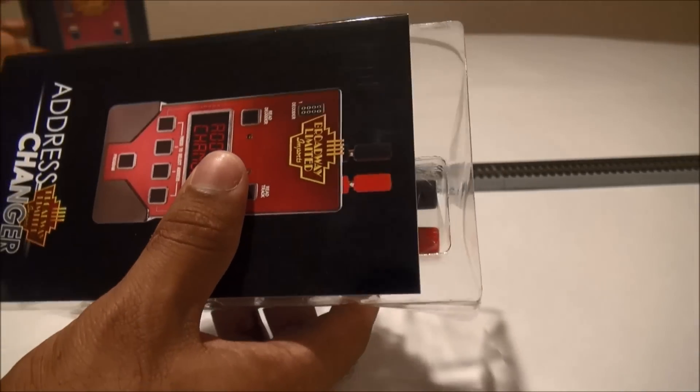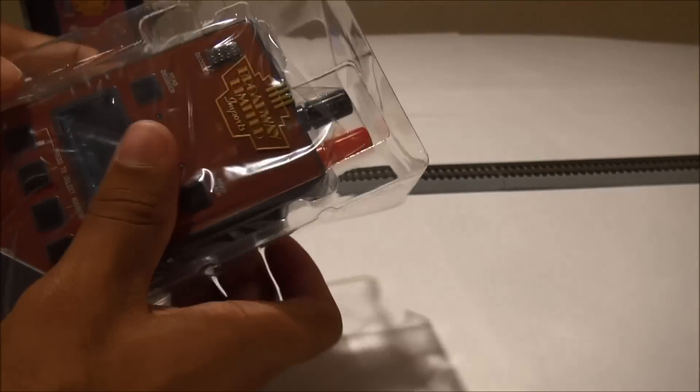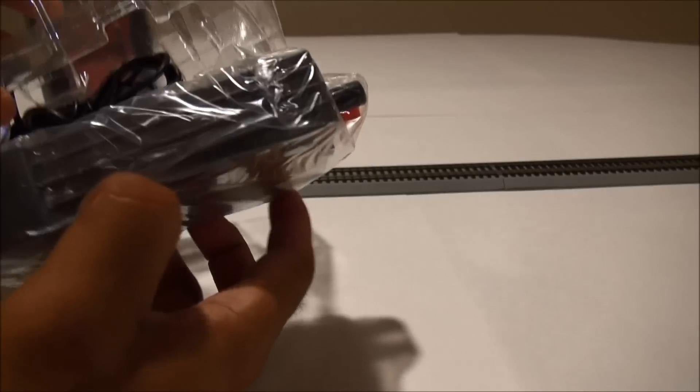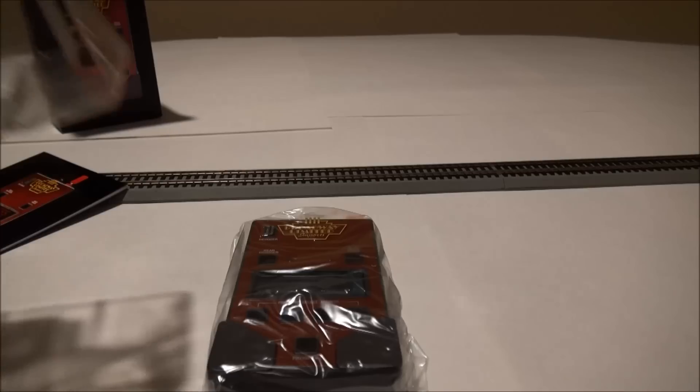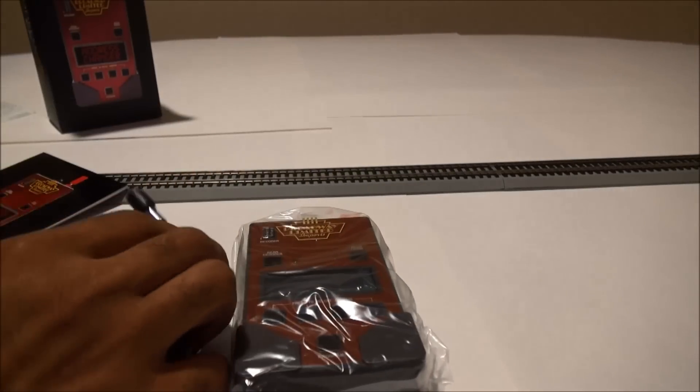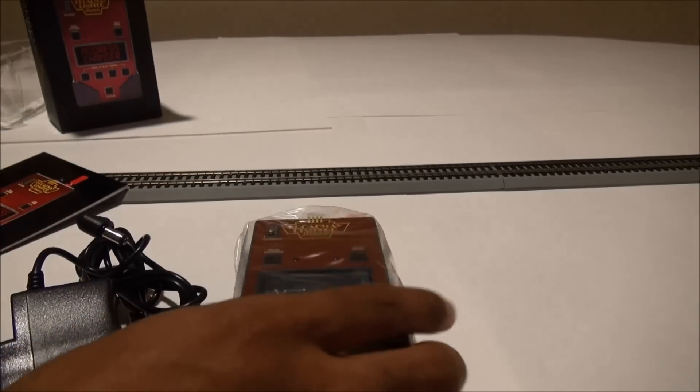Let's take a look. It looks like you got a manual we will go through in a moment, the address changer and its power supply, and some gel to keep the moisture out.